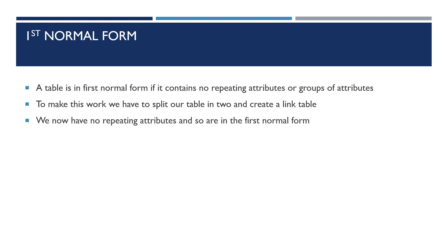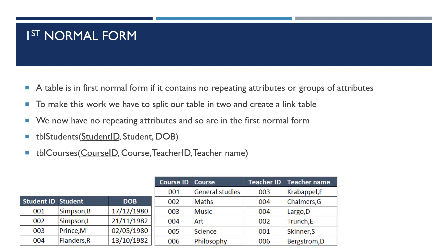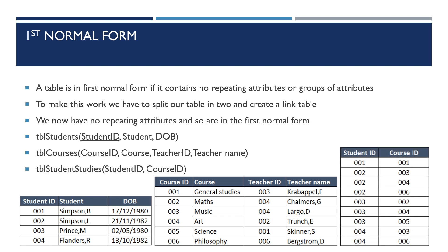We now have no repeating attributes and so are in first normal form. Our tables now include: Students, with student ID as the primary key and student name and date of birth as the other attributes; Courses, with course ID as the primary key and course, teacher ID, and teacher name as the other attributes; and a new table, Student Studies, with the primary keys from Student and Course making up a dual composite key to show which courses each student takes.